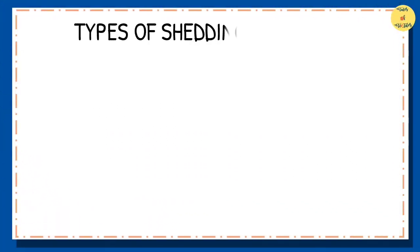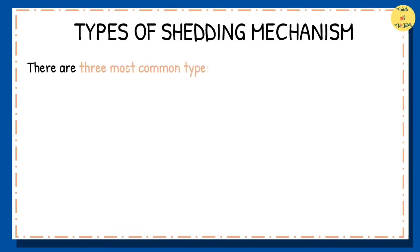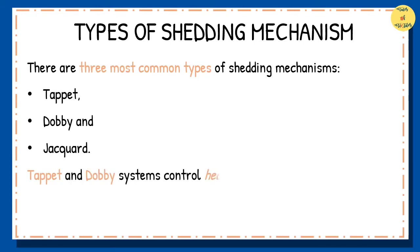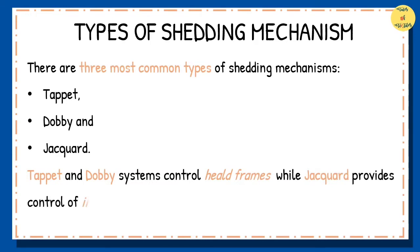There are three most common types of shedding mechanisms: namely tappet, dobby, and jacquard shedding. Tappet and dobby systems control heald frames, while jacquard provides control of individual warp yarn.